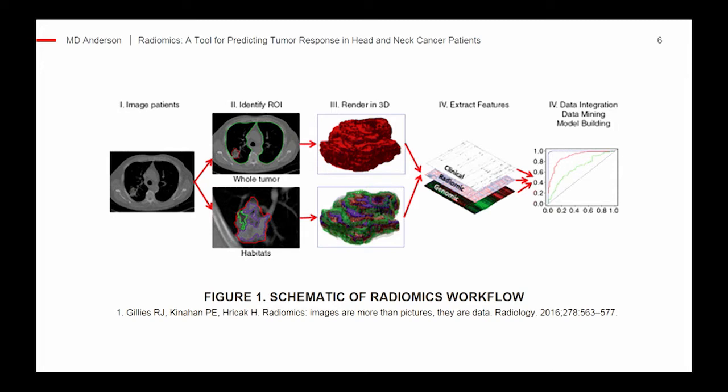You can also use auto-contouring machine learning algorithms. After we've contoured these tumors, you can extract radiomic features with statistical software. We used an in-house software called IBEX to get these features. From there you can integrate the data, mine it, and build models.